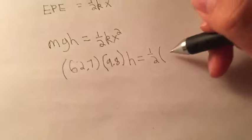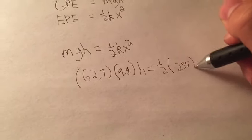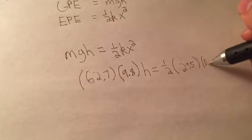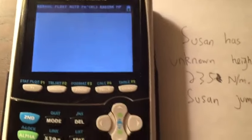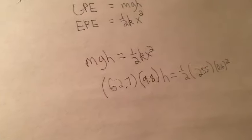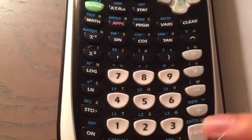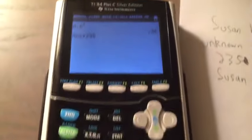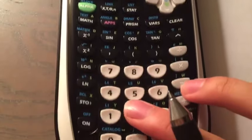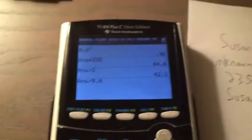235 times 0.6 meters squared. Now if we move over to our calculator, let's calculate. So this side, 0.6 squared, times 235, divided by 2, and then divide that by 9.8, divided by 62.7.